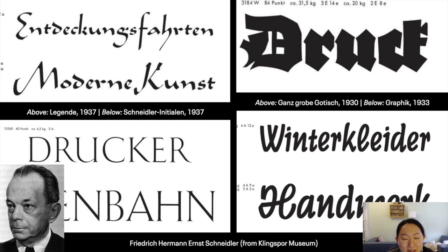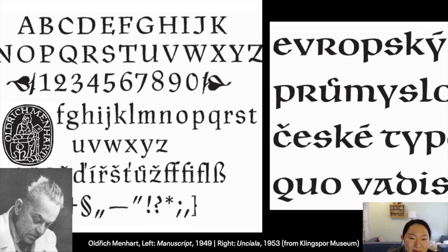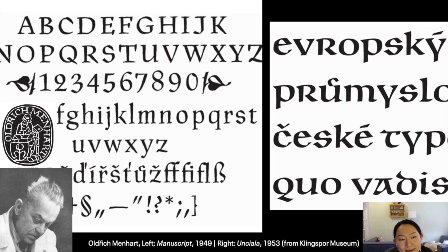Here's Albrecht Menhardt, who is my favorite type designer, influenced by the calligrapher Carl Roars. Albrecht Menhardt was very concerned with finding a national character in his typefaces. As you see here, he has a very strong calligraphic influence in his typefaces, and he considered himself foremost as a craftsman. It's very inspiring how much of the pen you see even in his typefaces.